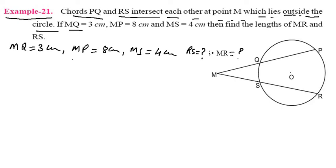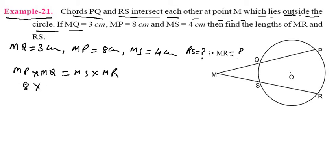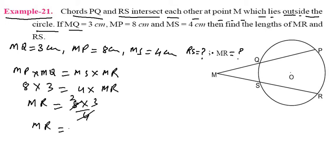When two chords intersect internally or externally, the formula is MP into MQ equals MS into MR. Putting values: MP is 8, MQ is 3, MS is 4. So MR equals 8 into 3 divided by 4 equals 24 divided by 4 equals 6 centimeters. That is the first answer.